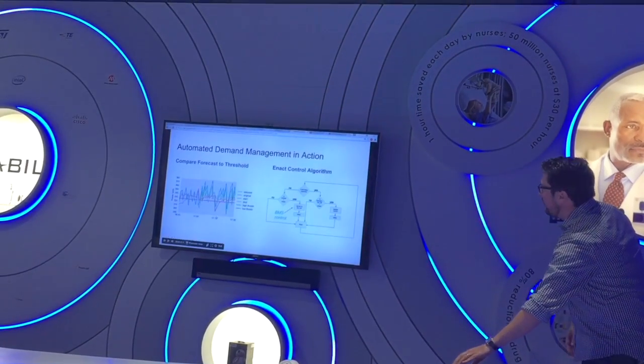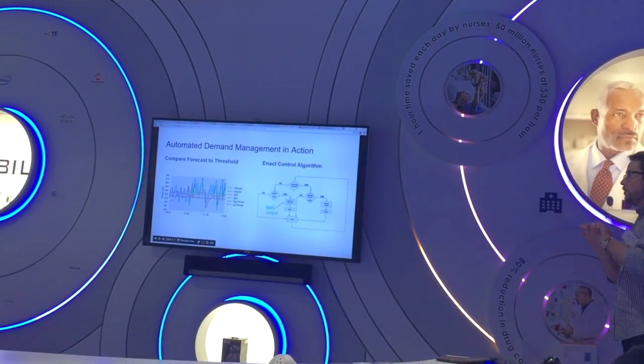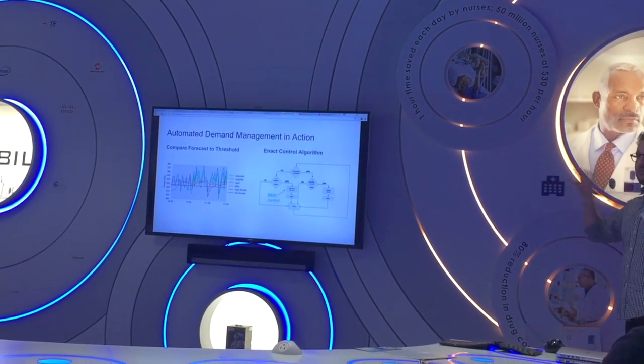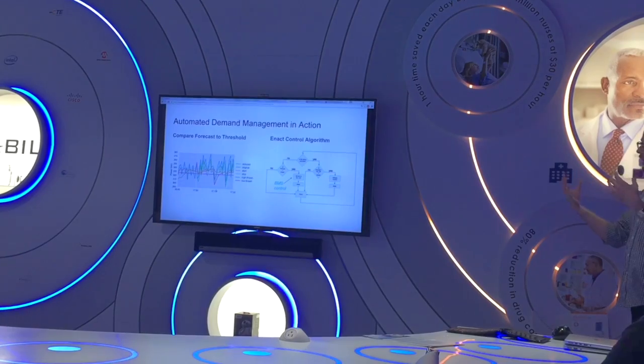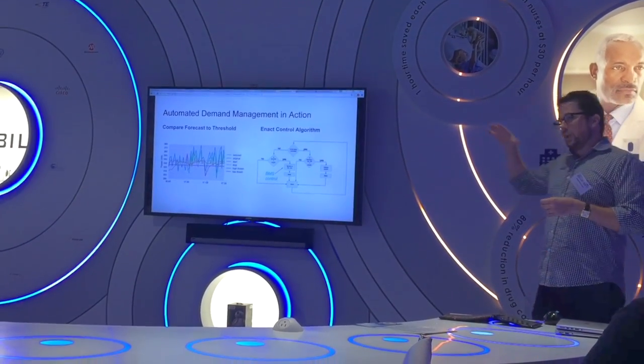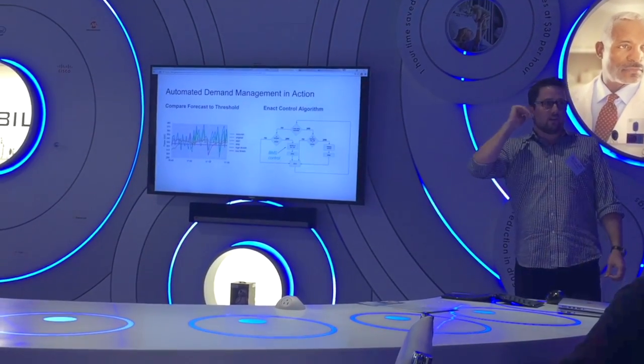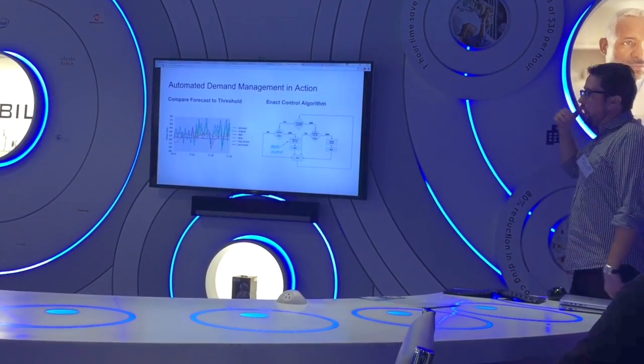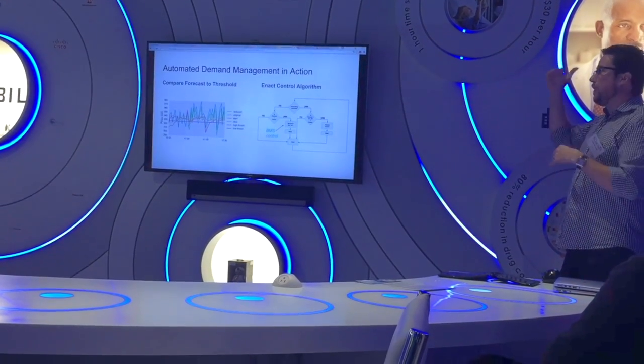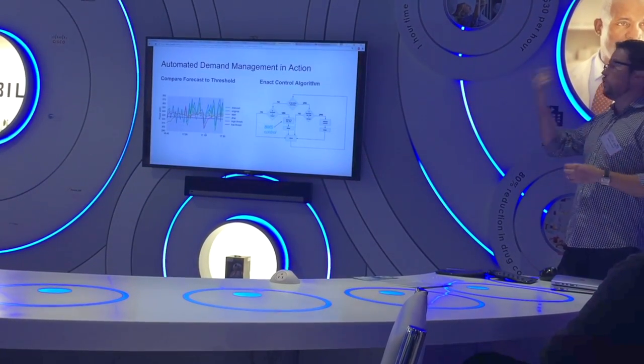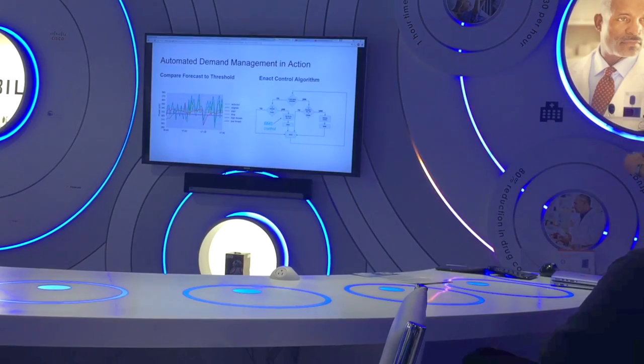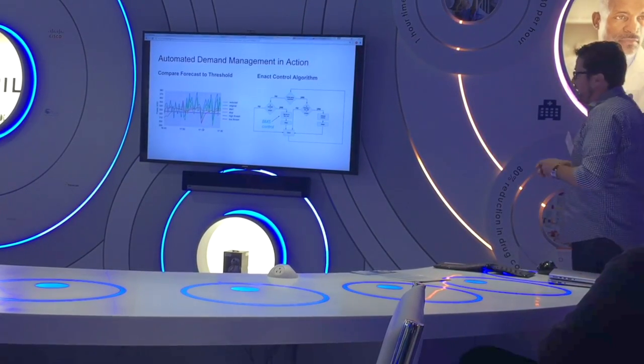And so then what we do is we compare that to the threshold, we look at all of what's happening in the building, all these different devices, how they're using energy and where the energy is going. And if we think there's a chance that we're going to cross a particular demand threshold, it's either indicative of a new billing tier or perhaps just our kind of monthly peak where it's going to charge us a super peak rate, something like that. We then set this control algorithm into action.